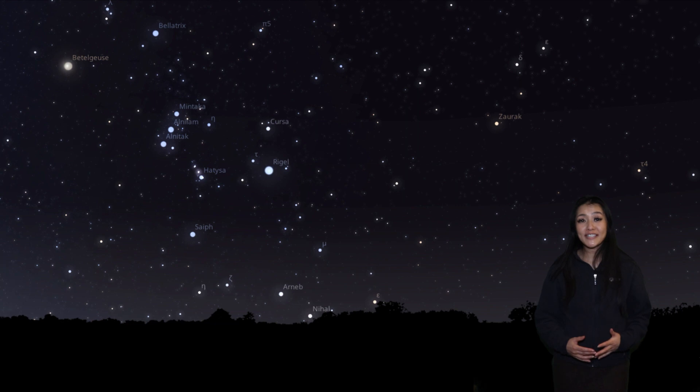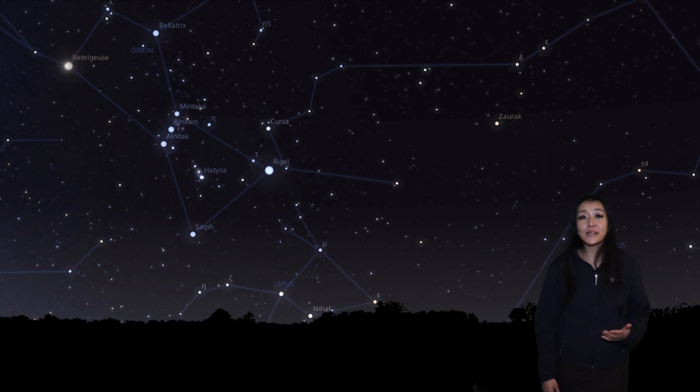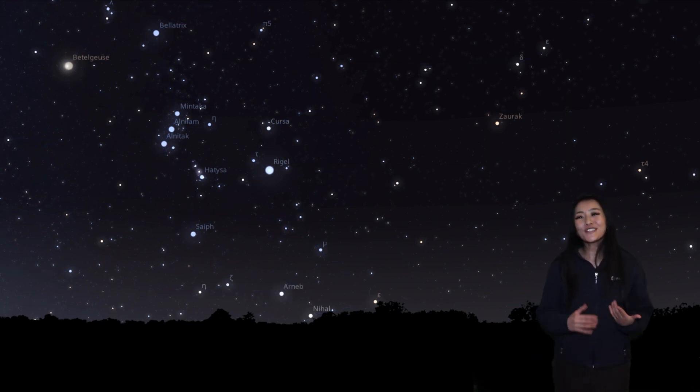Recently, astronomers have noticed that Betelgeuse is behaving extremely strangely. It's much dimmer than it has ever been before, and even dimmer than the star Rigel in the bottom right of the Orion constellation. But does that mean that Betelgeuse is about to blow?